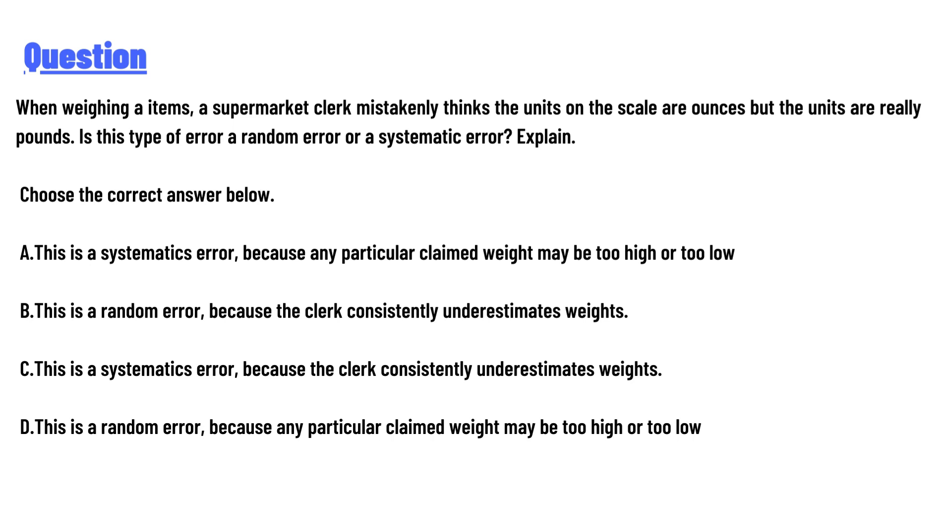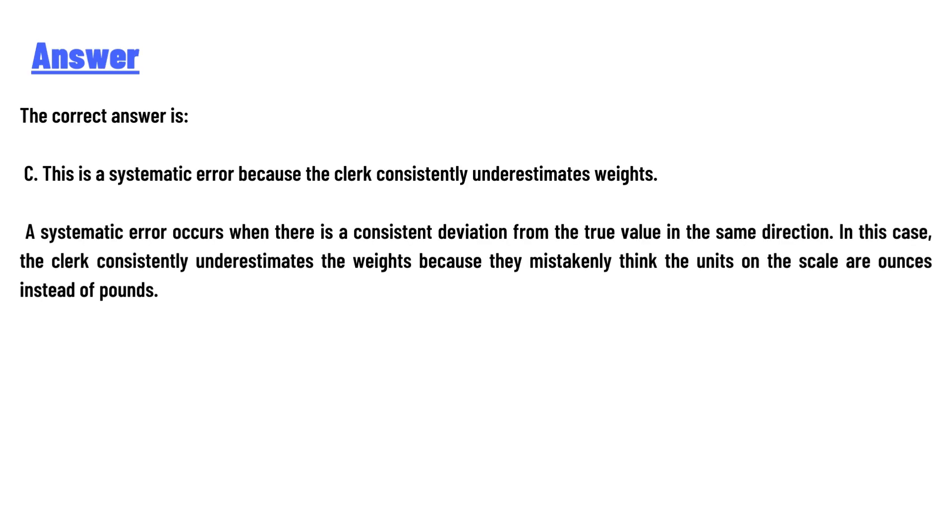And the answer to the question is: The correct answer is C. This is a systematic error because the clerk consistently underestimates weights. A systematic error occurs when there is a consistent deviation from the true value in the same direction.